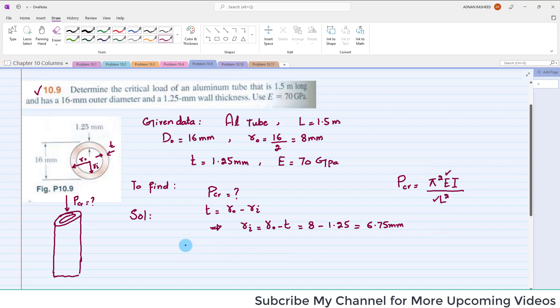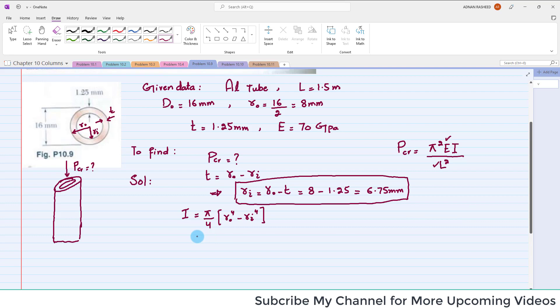We know that I for this hollow tube is equal to pi by 4, R naught to the fourth minus R i to the fourth. We have R naught, we have R i, and for this purpose we first found the value of R i.